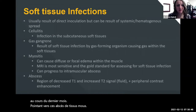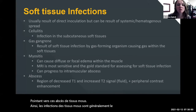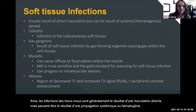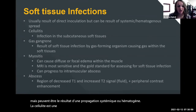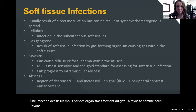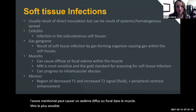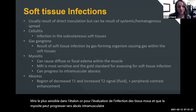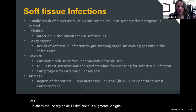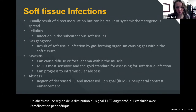Soft tissue infections are usually a result of direct inoculation but can result from systemic or hematogenous spread. Cellulitis is an infection in the subcutaneous tissues. Gas gangrene can result from gas-forming organisms. Myositis can cause diffuse or focal edema within the muscle. MRI is most sensitive and the gold standard for assessing soft tissue infection. Myositis can progress to intramuscular abscess. An abscess is a region of decreased T1 and increased T2 signal — fluid with peripheral contrast enhancement.